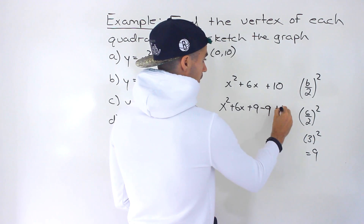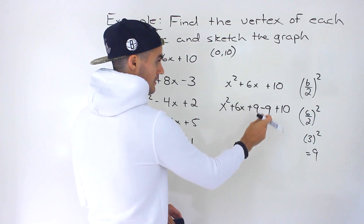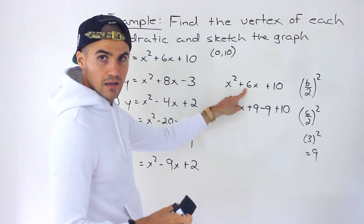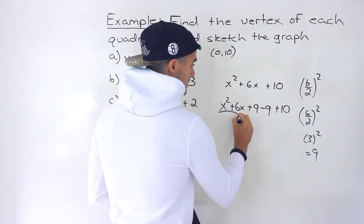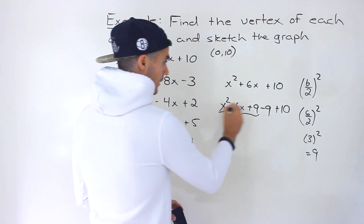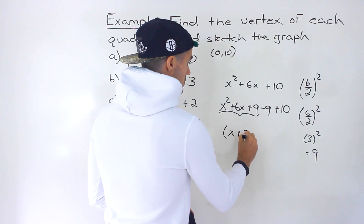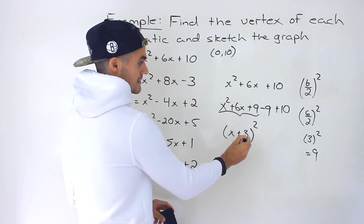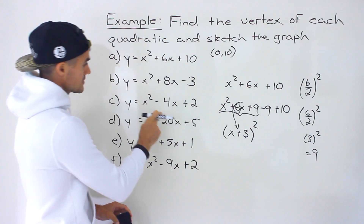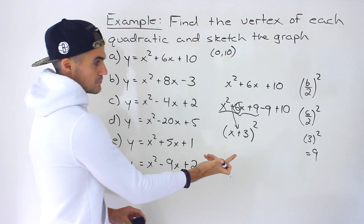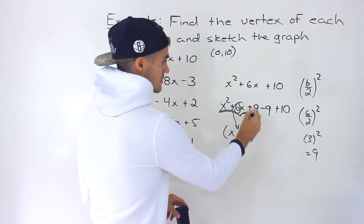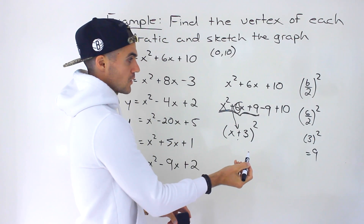We add that value and subtract that value, keeping the + 10 at the end. Adding +9 and −9 is just zero, so the quadratic is unchanged. The reason we do this is that those three terms — x² + 6x + 9 — will always factor into a perfect square trinomial. The pattern is that the value inside the bracket is always half of the b value, and the sign carries over.